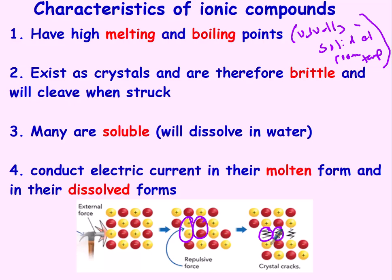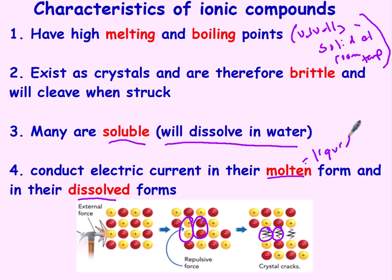Many ionic compounds are soluble, meaning they dissolve in water. And many can conduct electric currents in their molten and dissolved forms. It will not conduct as a solid — it will only conduct in its liquid, or molten, and dissolved forms.